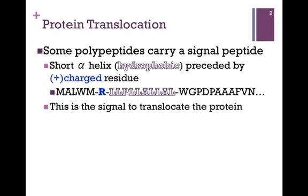These polypeptides often carry a signal peptide. Note that this peptide is actually a part of the original nascent polypeptide chain. This signal peptide is a short hydrophobic alpha helix, which is preceded by a positively charged residue. In this example, our hydrophobic alpha helix is marked by the letters outlined in purple, and it is preceded by a blue arginine letter.